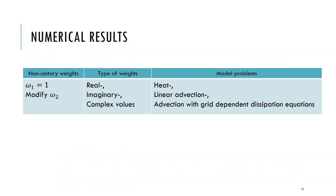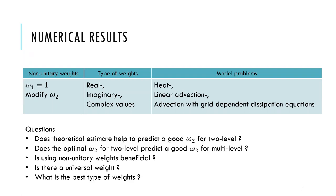In our numerical experiment, we used non-unitary weights with omega_1 equal to 1 and modified omega_2. We explored three weight types: real, imaginary, and complex values. We used the following model problems: heat equation, linear advection equation, and advection with grid-dependent dissipation equation. The questions we had are: does the theoretical estimate help predict a good omega_2 for the two-level method? Does the optimal omega_2 for the two-level method predict a good omega_2 for the multi-level method? Is using non-unitary weights beneficial? Is there a universal weight? And what is the best type of weight?